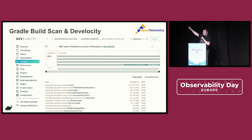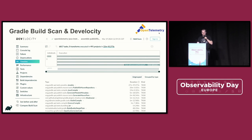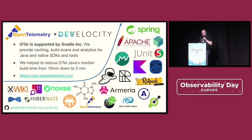Here is an example of Gradle build scan and Develocity — it's SaaS and freemium for all open source and commercial projects. There we can analyze all the execution, performance, et cetera. This information is an extended version of OpenTelemetry; it also includes cloud events, profiles, and things that are yet to be implemented in OpenTelemetry. The OpenTelemetry Java instrumentation project itself is supported by Gradle, and they use Develocity to automate their builds and speed up delivery for Java components.